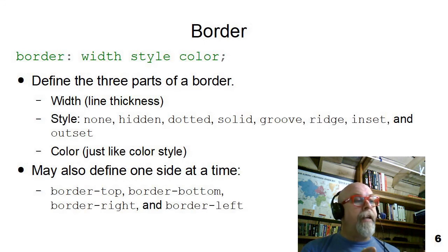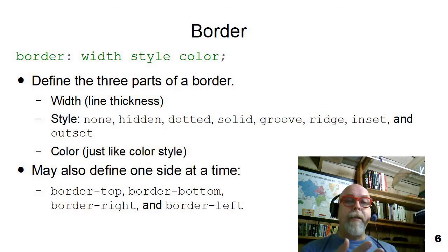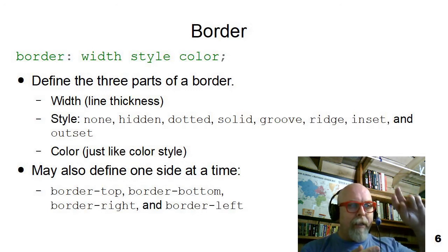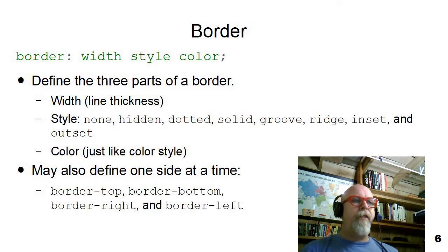There are several built-in styles and they are none, hidden, which would be no border or a hidden border which would take up space in the box model but wouldn't be seen, a dotted border which looks like dots, a solid border which is a solid line, a groove border which has a little line in the middle and kind of has a little groove effect, a ridge border which looks a little taller in the middle, the inset border, and the outset border.